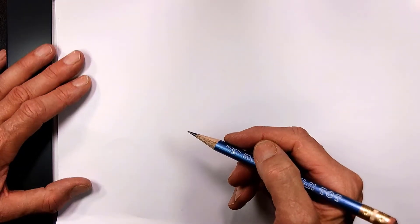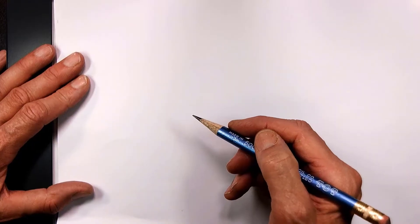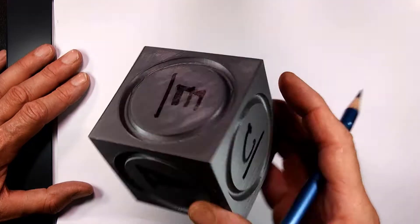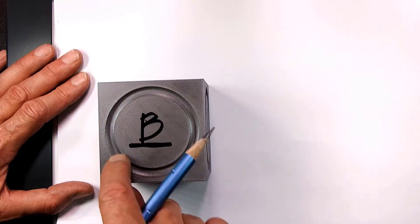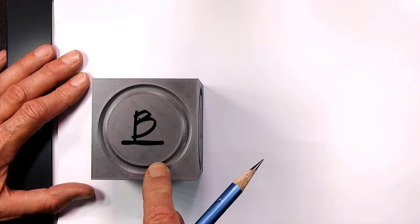It's very important to learn how to draw circles because many objects have circles. Let's go back to our cube. You see, this is an engraved circle right there. We're going to draw that. This is how you draw a circle.